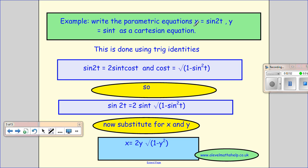And then you can see I can substitute x for my sine 2t, and I can substitute y equals sine t every time I see that. And so I put them in here, and I get x equals 2y square root of 1 minus y squared.